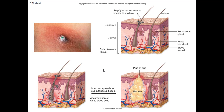With hair follicle infections, looking at figure 22.2, symptoms can appear as folliculitis — a red bump or pimple, an infected hair follicle. You can have a boil, also known as a furuncle, which is a localized infection spread to neighboring tissue. A carbuncle is a large area of redness, swelling, and pain with several sites of pus drainage. Fever may be present, usually occurring in areas of thicker skin such as the neck. This is usually caused by Staphylococcus aureus.